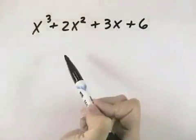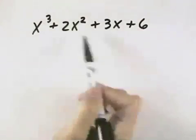In this problem, to factor it completely, we first look for a greatest common factor, and there is none.